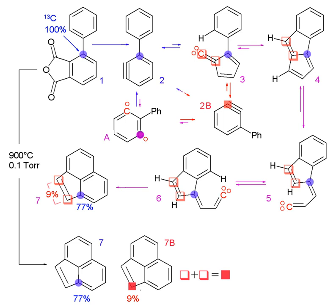Isotope tracers are commonly used in the form of isotope ratios. By studying the ratio between two isotopes of the same element, we avoid effects involving the overall abundance of the element, which usually swamp the much smaller variations in isotopic abundances.